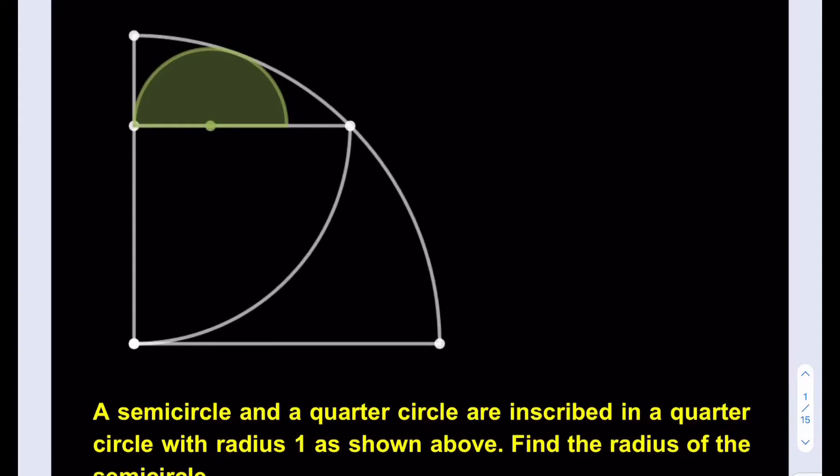Hello everyone. In this video we're going to be solving a geometry puzzle: a semicircle and a quarter circle inscribed in a quarter circle with radius 1 as shown above. Find the radius of the semicircle.